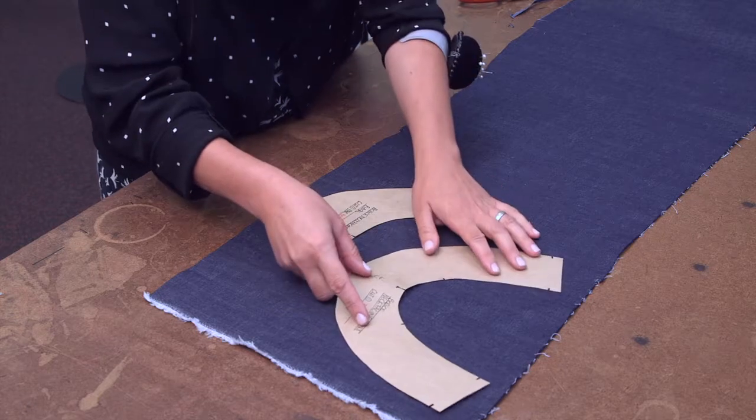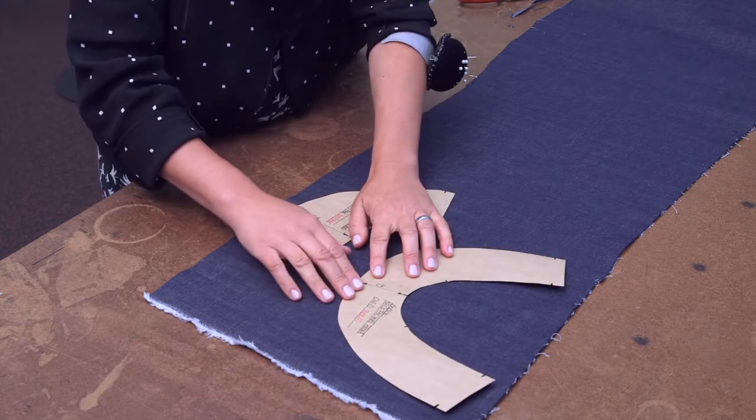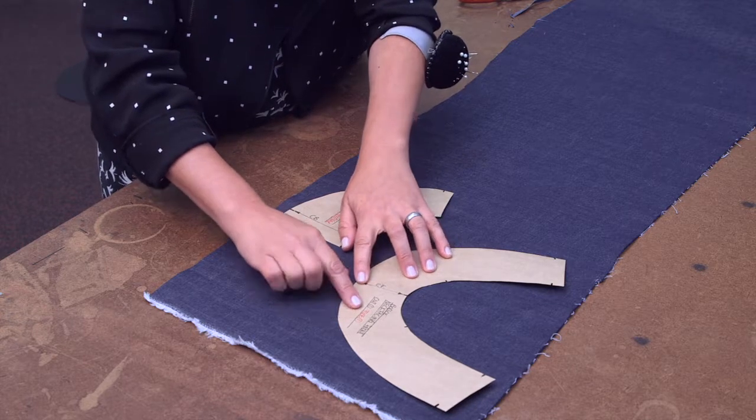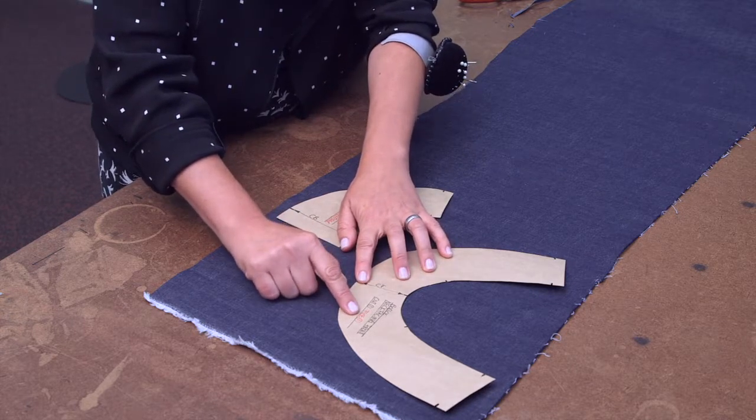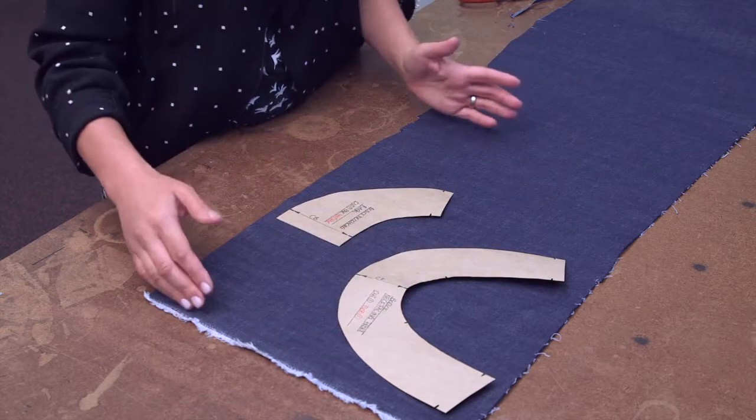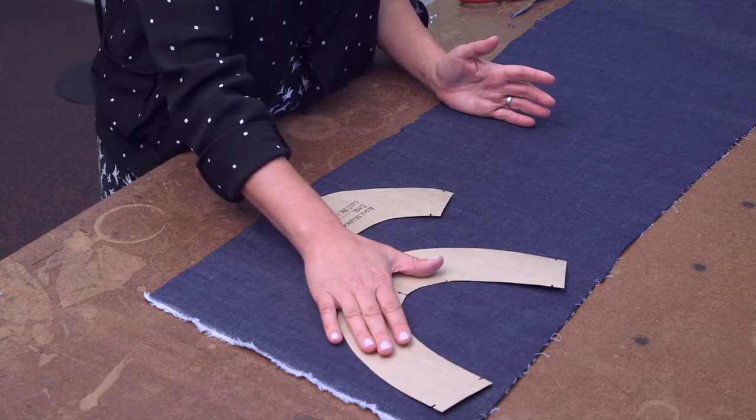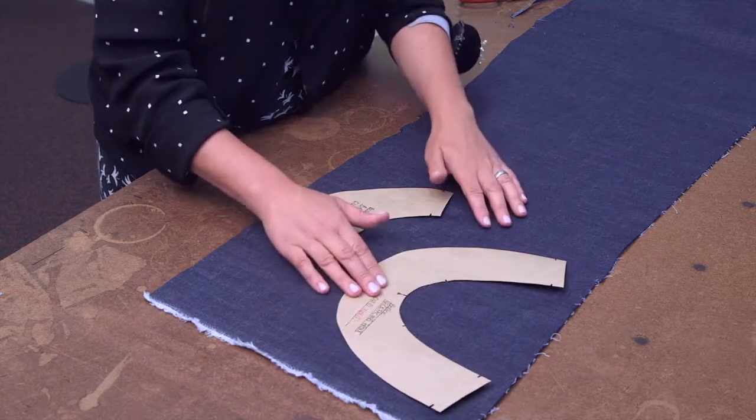When you need to block fuse a piece, it will indicate on your pattern piece if you have to do so. It says, however, fuse. It doesn't say block fuse. Block fusing is stabilizing a fabric as a whole piece, and then afterwards, once it's stabilized, you cut your pattern pieces out.